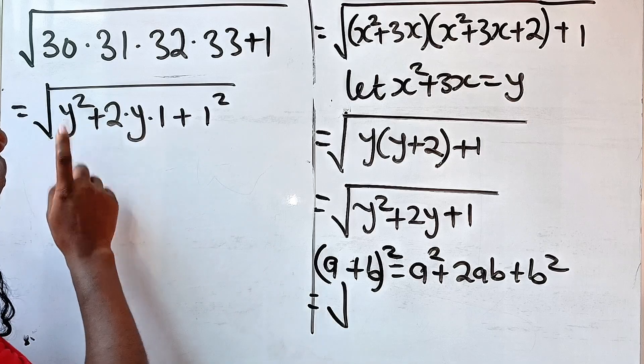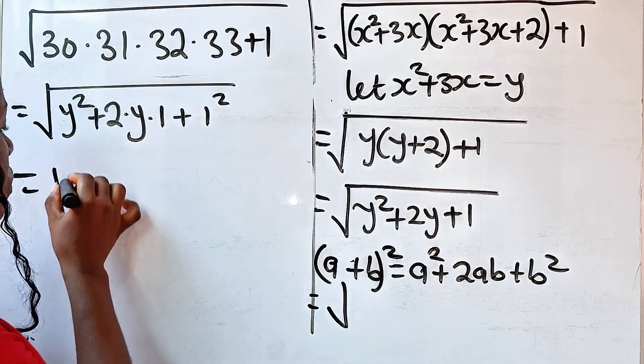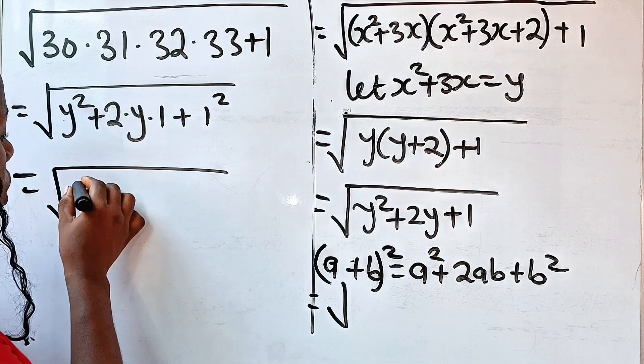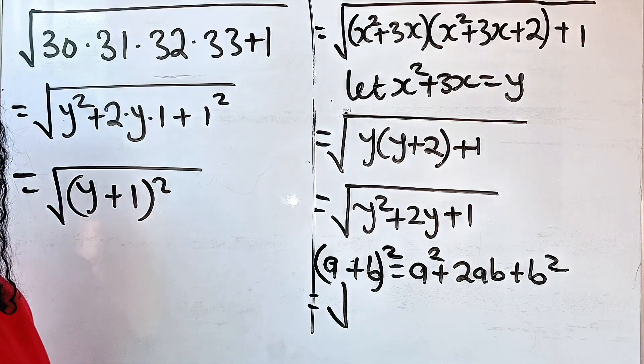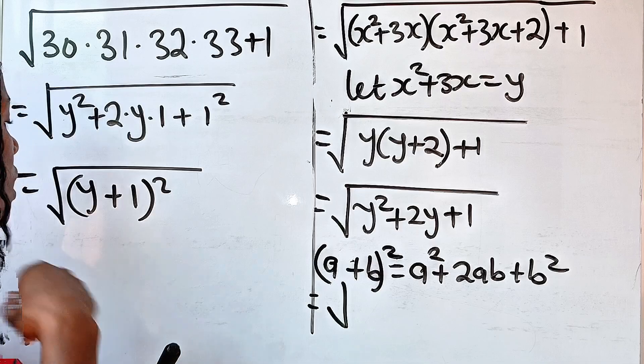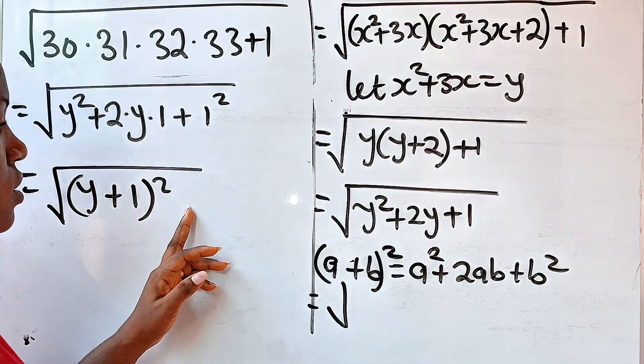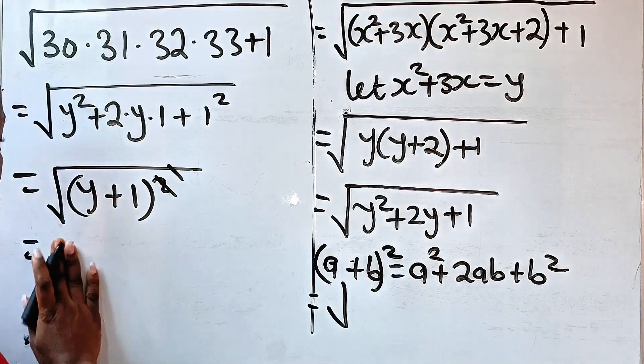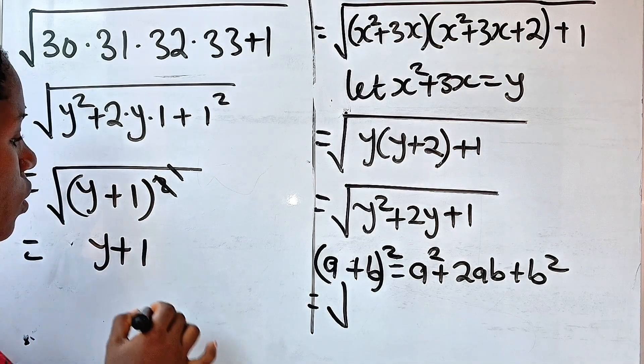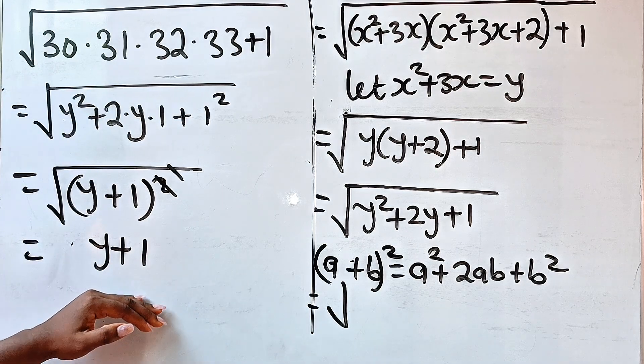Now, that means that our a is y and our b is 1. So this is equal to the square root of y plus 1 squared. Y plus 1 squared. Now, square root of a square is equal to what? This we cancel out each other. So this we cancel this. We have this to be what? Y plus 1, all right? Yes, we end up having this as y plus 1.